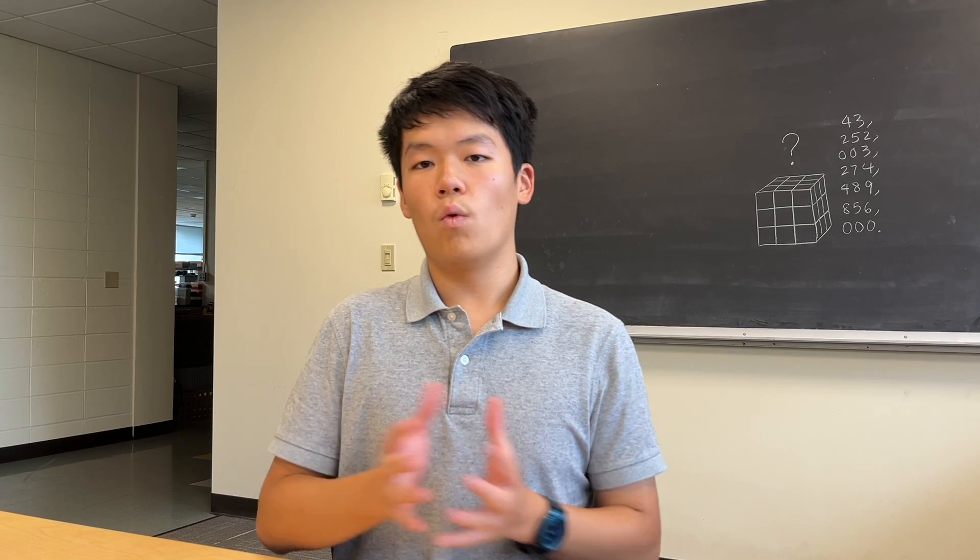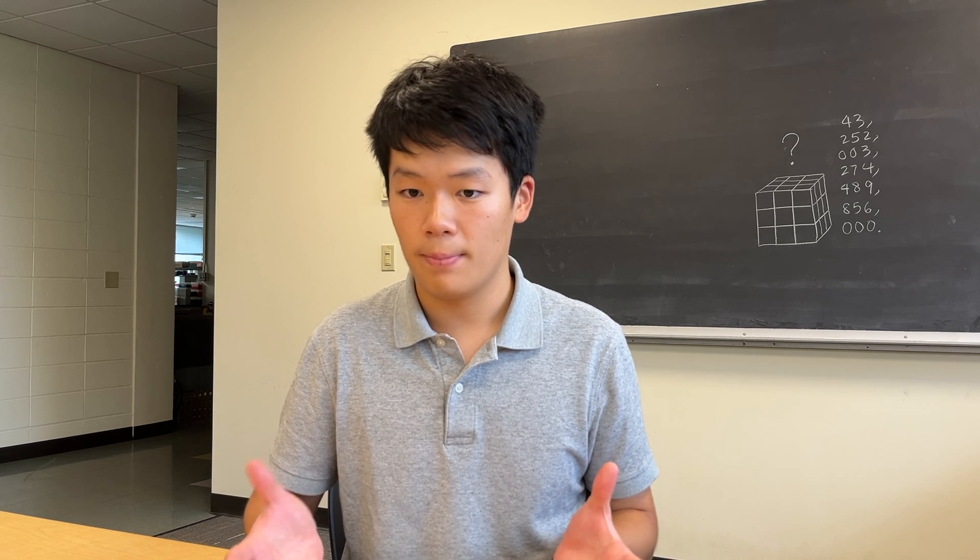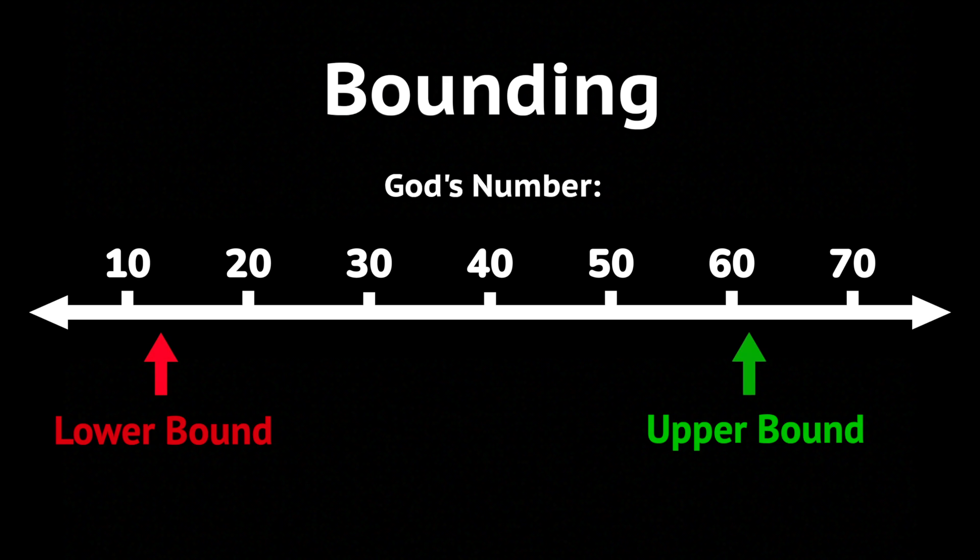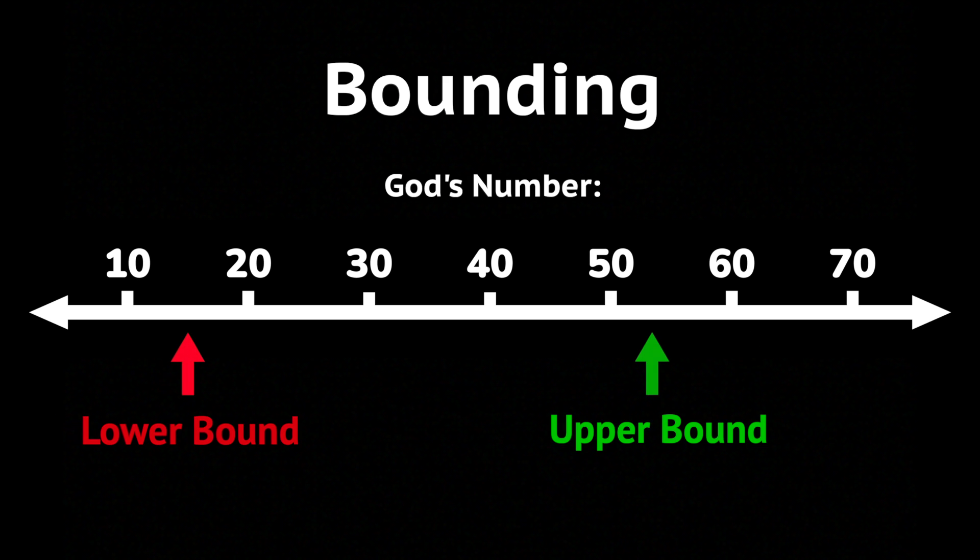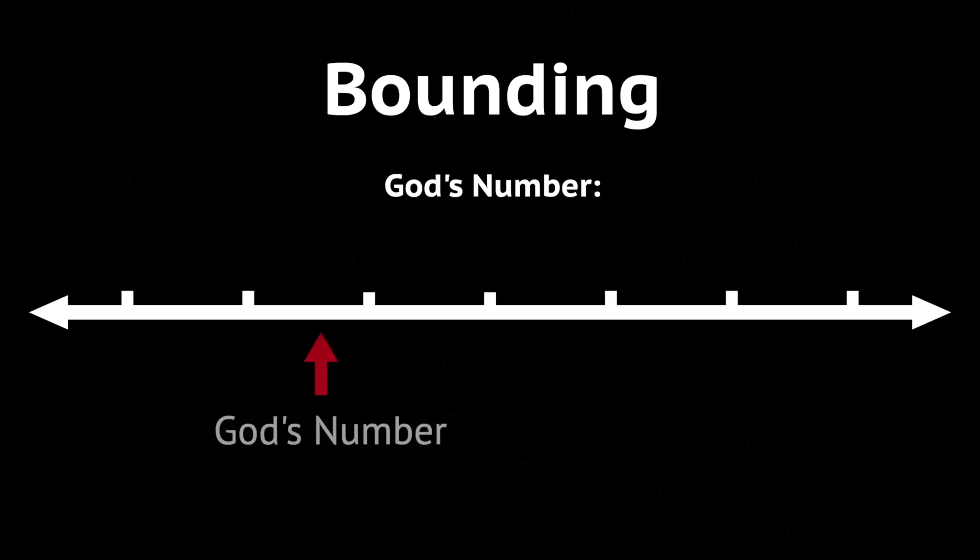In the early days, one overarching method was used to try to determine God's number. Bounding. Mathematicians found lower bounds and upper bounds to God's number. And over time, better and better bounds were found, which increased the lower bound and decreased the upper bound. Eventually, when the lower bound meets the upper bound, we find God's number.